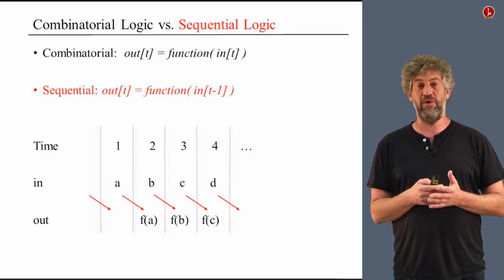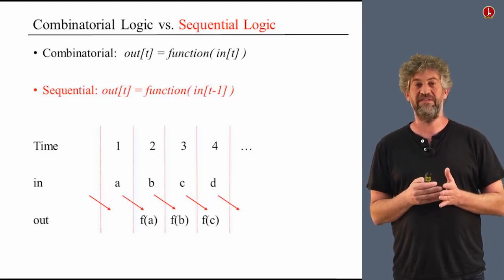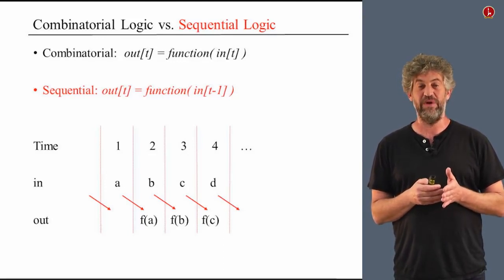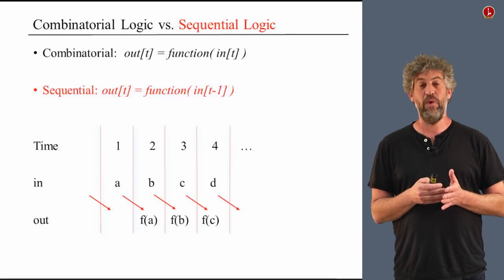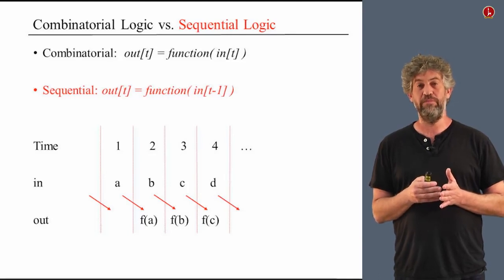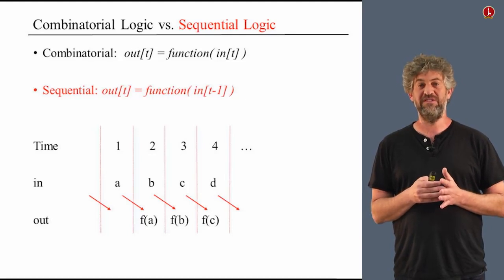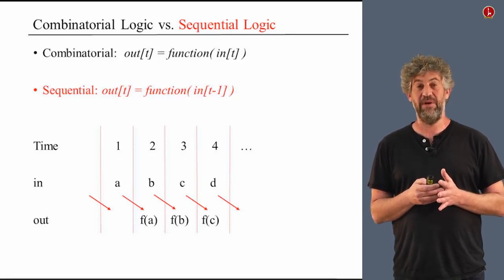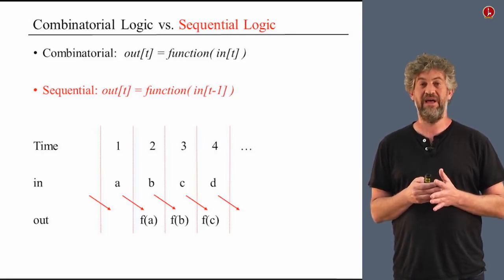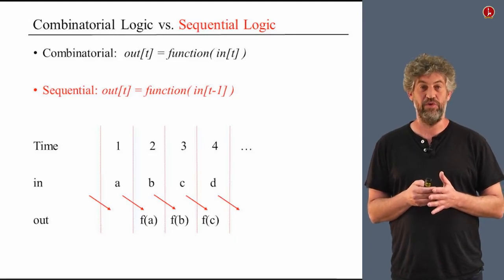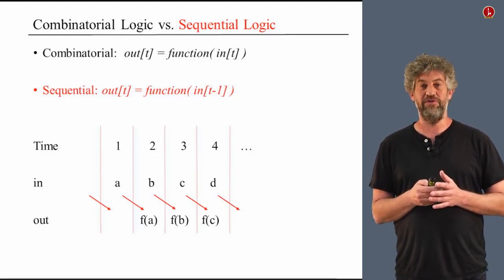In principle, we could also have it depend on what is happening now at time t itself. But it's probably best to actually split the two types of computation we do. The combinatorial logic, which happens instantaneously within a time unit. And the sequential logic, where we don't want to mix new information with old information usually. So we just think about that at time t plus one depends on the input at the previous time unit at time t.